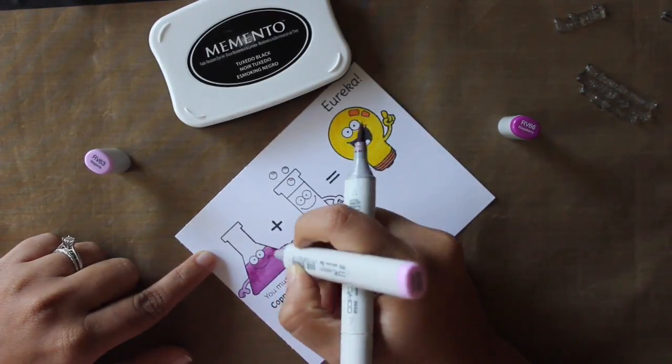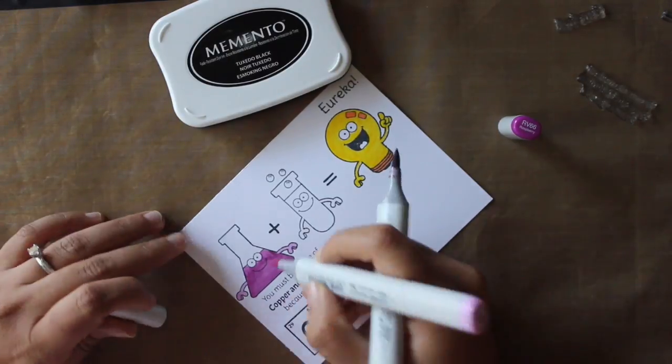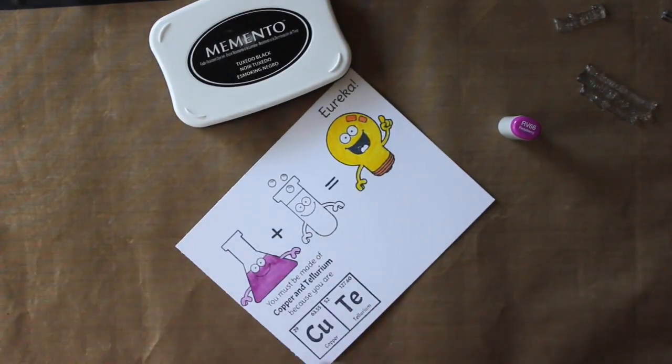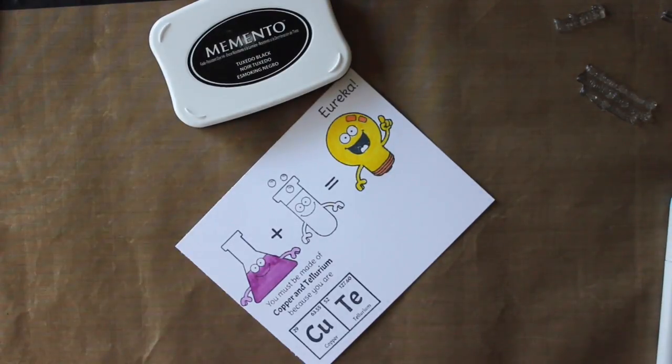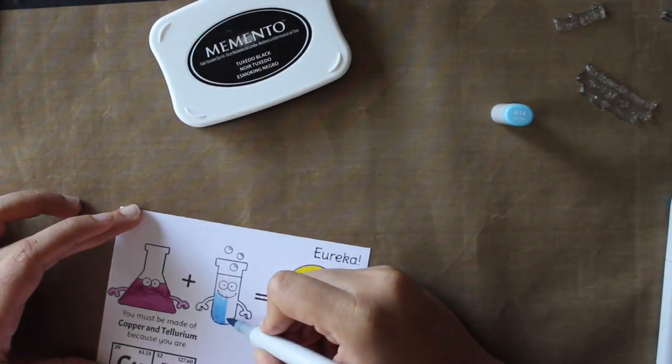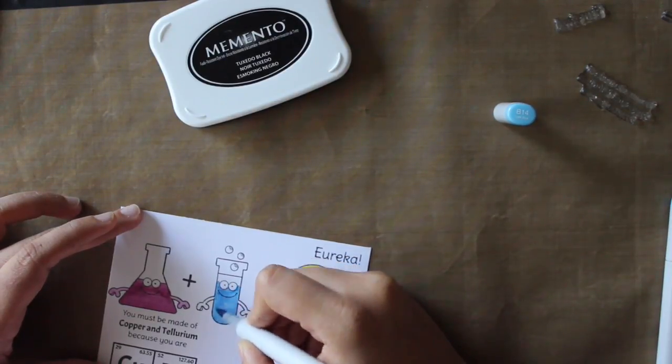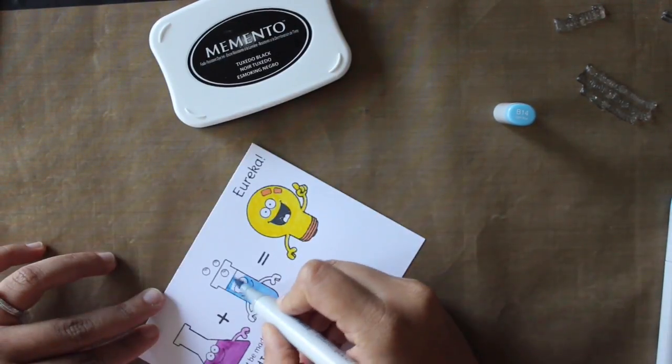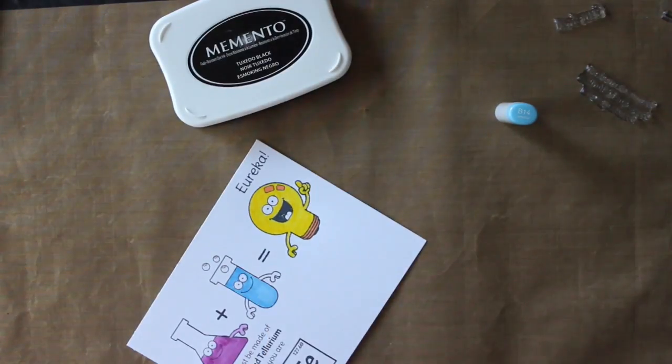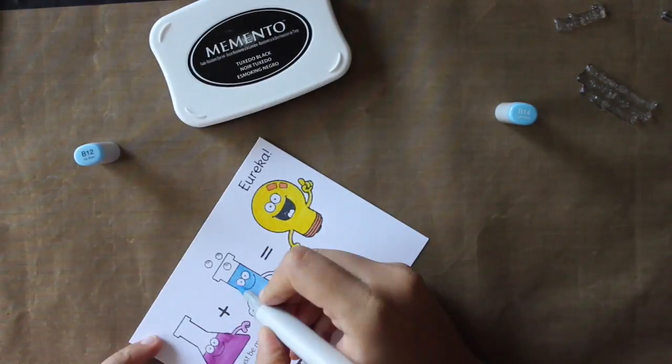I went for the blue color for the second beaker because it has little tiny bubbles coming out from the beaker and I thought it was a perfect color. Now you can see I didn't do a very good job on the Copic coloring. I'm still learning little techniques and tricks on how to do Copic coloring well. So please bear with my Copic coloring for now.